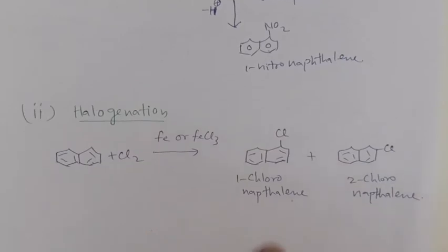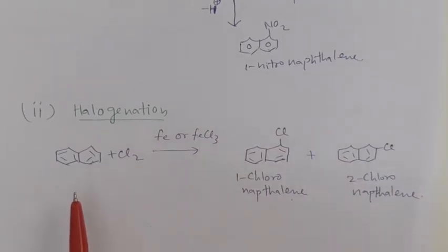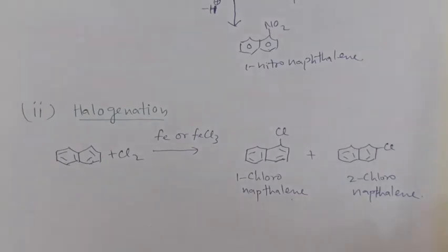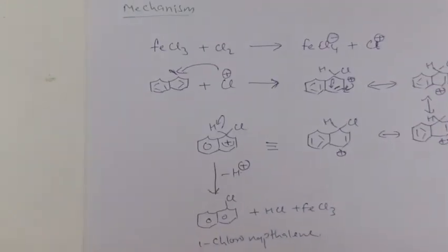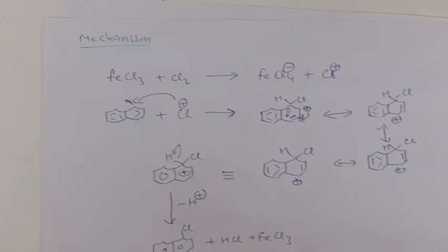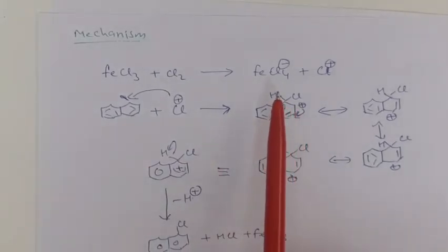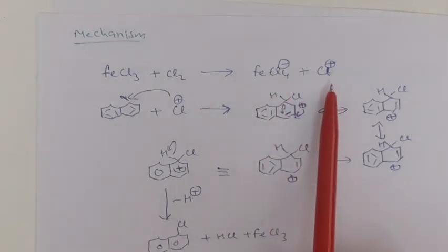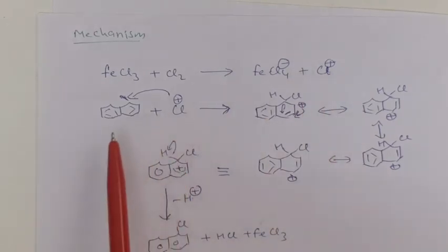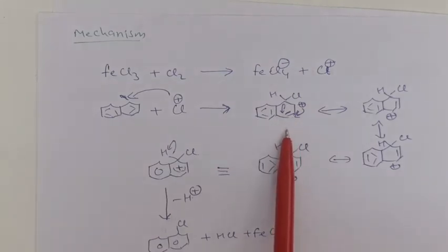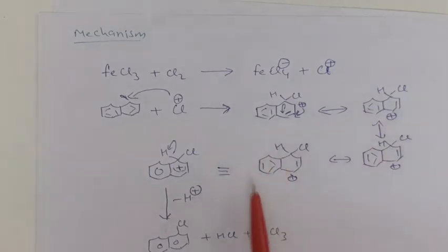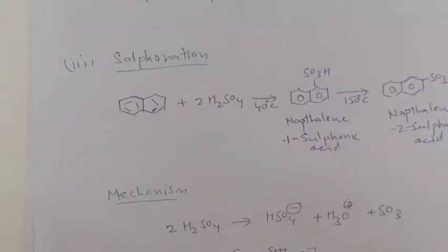In the halogenation reaction of naphthalene, naphthalene reacts with chlorine in the presence of iron or FeCl3, giving 1-chloronaphthalene as the major product and 2-chloronaphthalene as the minor product. In the mechanism, FeCl3 reacts with Cl2 to give FeCl4- and the chloronium ion (Cl+). The chloronium ion is electron deficient and acts as the electrophile; it attacks naphthalene at the alpha position to give the arenium ion, which is stabilized by resonating structures. Finally, it eliminates a proton to give 1-chloronaphthalene.